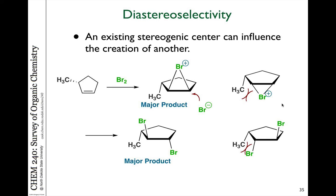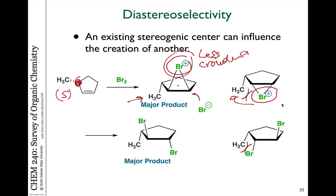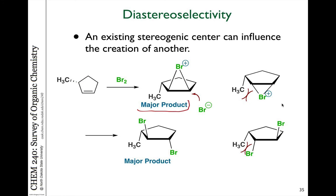If there's already a stereogenic carbon in the molecule, the configuration of that carbon can have an influence on reactions. For example, consider the bromination of the S isomer of 3-methylcyclopentene. In the first step, there are two possible products to form the bromonium intermediate: the bromine could bridge on the top face or the bottom face — opposite the CH3 group, or on the same side as the CH3 group. The configuration of that stereogenic carbon makes those pathways different: the pathway opposite the CH3 is less crowded and lower energy. So the first step will form more of that product than the other.